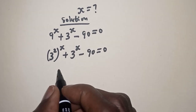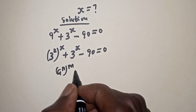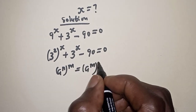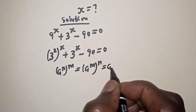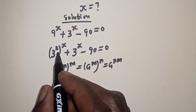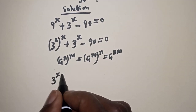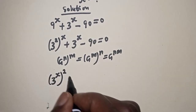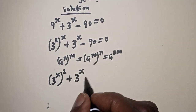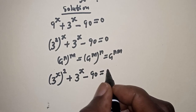Take note of this rule: a raised to power n, to the power of m, is equal to a raised to power m to the power of n, which equals a raised to power n times m. So this can be written as 3 raised to power s, all squared, plus 3 raised to power s minus 90 is equal to 0.